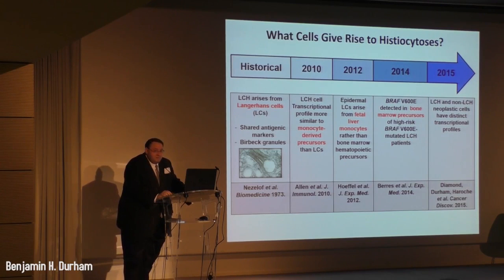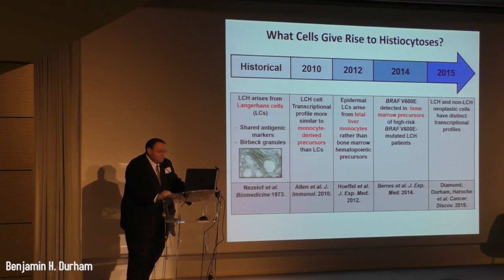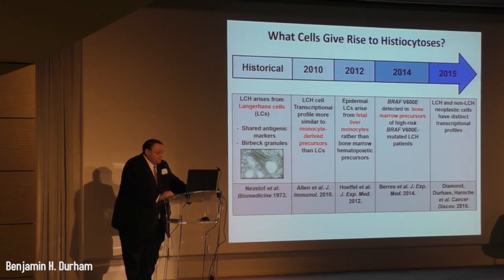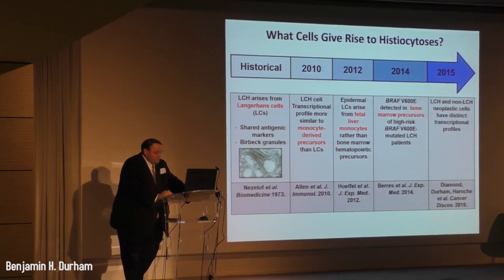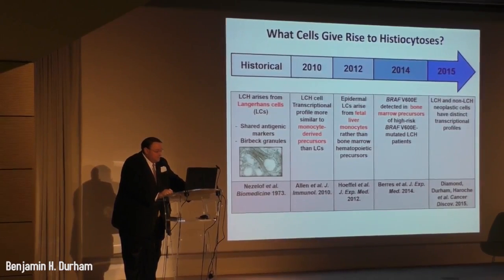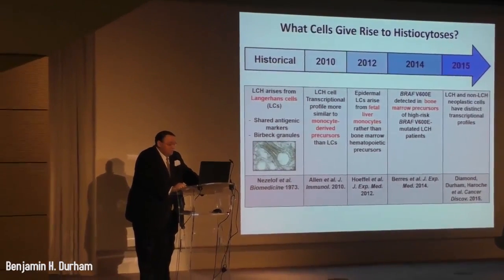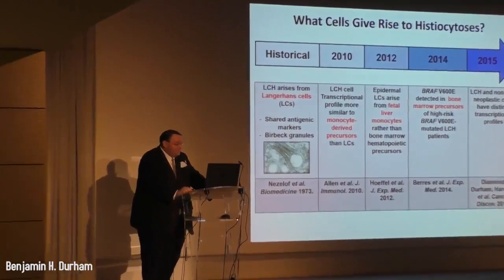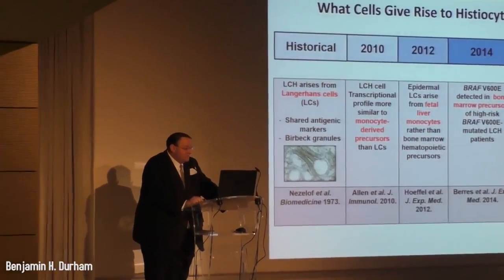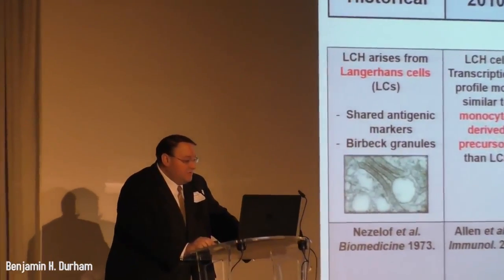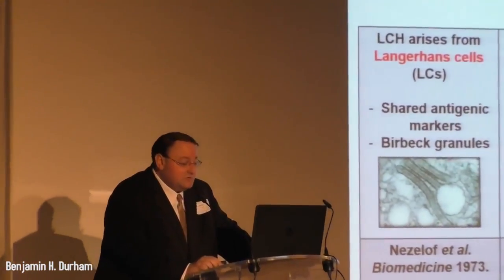After the discovery of BRAF V600E in both Langerhans cell histiocytosis and Erdheim-Chester disease, the same group from the University of Texas and Texas Children's Hospital with Kim McLean, Carl Allen, as well as Miriam Rod from Mount Sinai, found that BRAF V600E was detected in the bone marrow precursor of high-risk BRAF V600E mutated LCH patients.